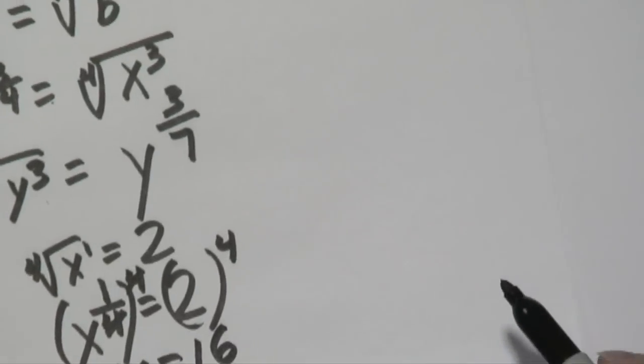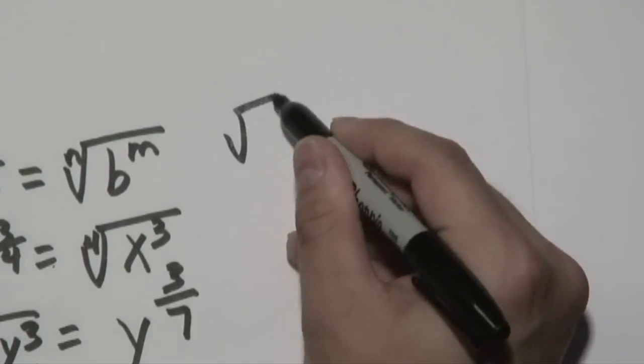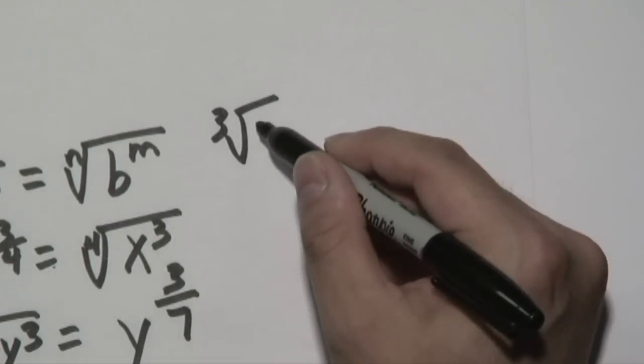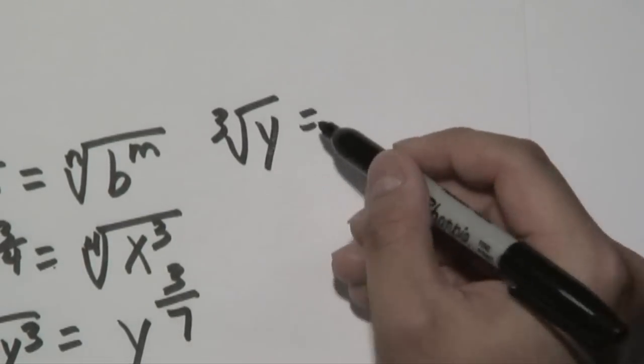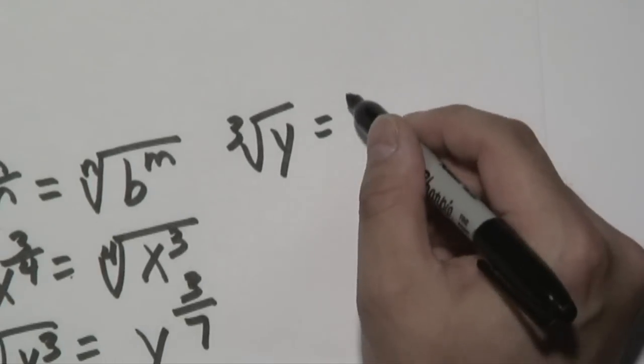Now, let's do another quick example here. Suppose you have an equation. The cube root of y is equal to, oh, let's just say 4.